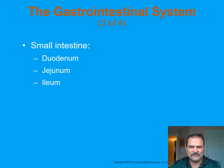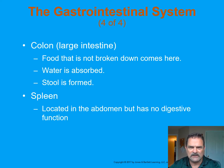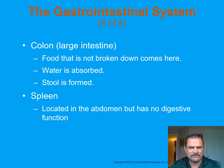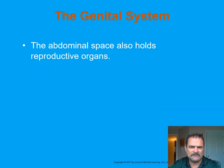Food travels from the stomach to the small intestines, which consists of three sections: the duodenum, the jejunum, and the ileum. The colon — now the large intestines — does not break down food. It moves waste into the colon, where water is absorbed and stool is formed. The spleen is located in the abdomen but has no digestive function. The abdominal space also holds the reproductive organs.